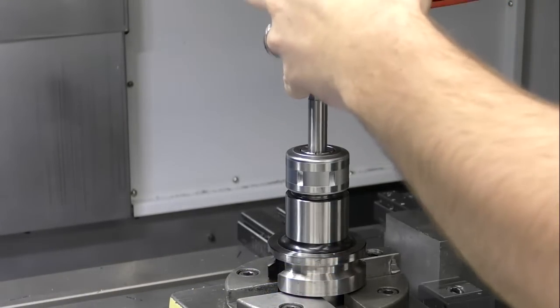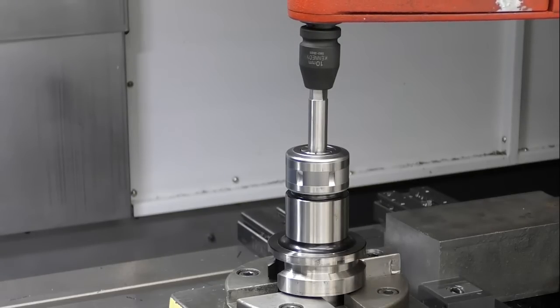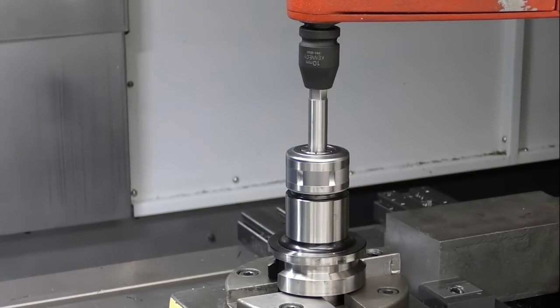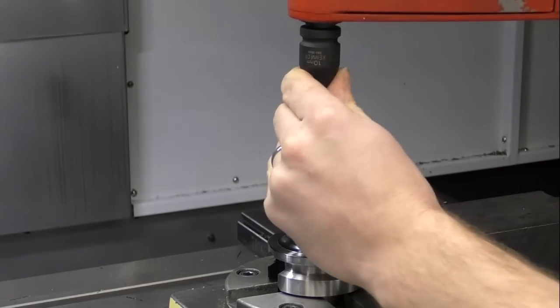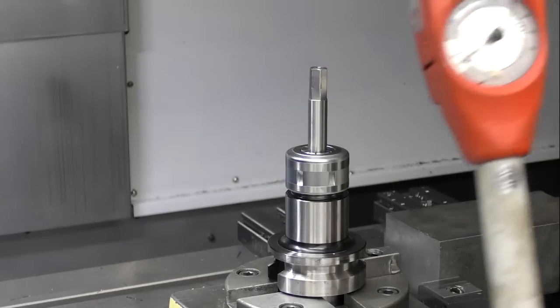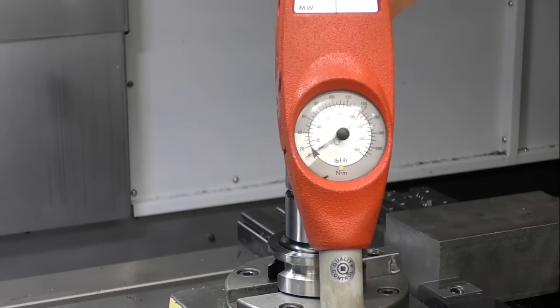And what you can actually see here is the top of the test bar actually deforming due to the increased torque. And what we get there is 140 newton meters of gripping force.